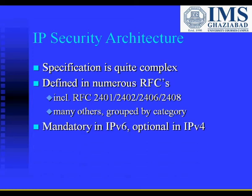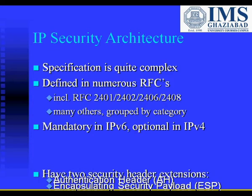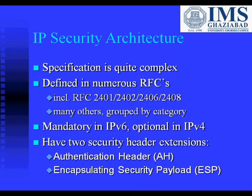For both IP version 6 and version 4, security extension headers include the Authentication Header and ESP — Encapsulating Security Payload. The security features are implemented as extension headers that follow the main IP header. The extension header for authentication is known as the Authentication Header, and encryption is known as the Encapsulating Security Payload ESP header.